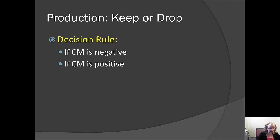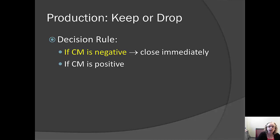The decision rule is that if the contribution margin of the product is negative, then the firm should definitely consider closing that product line immediately. This means that the selling price of these units is not even covering the variable cost, so the more units the firm sells, the more unprofitable that line will be.